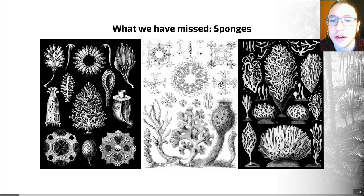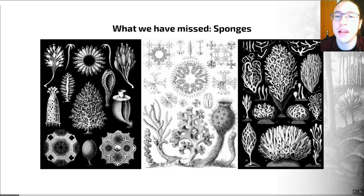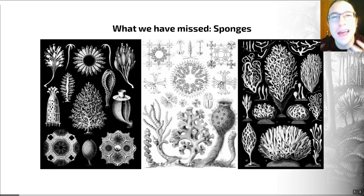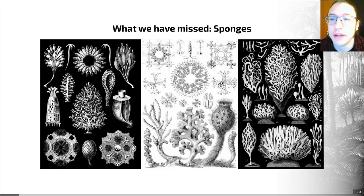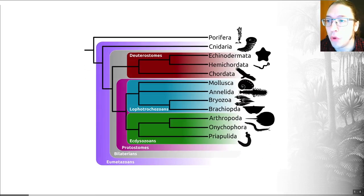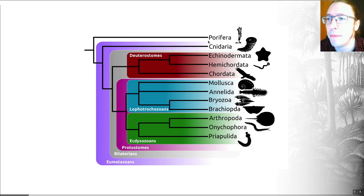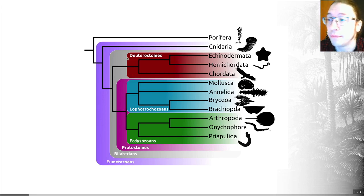Sponges have this unique porous structure and a body plan based at the cellular level of organization. They generally lack symmetry and true differentiated tissues and organs, so they're relatively simple creatures — not as complex as some of the other animals we've looked at over this course. On our phylogeny of animals, they're one of the earliest branching members of the clade that later develops into the bilaterian animals, predating the origin of those bilaterians.